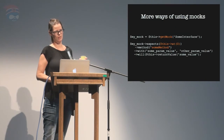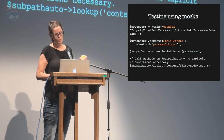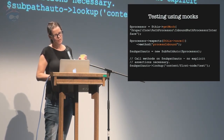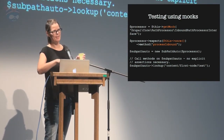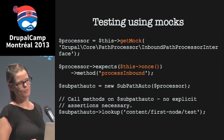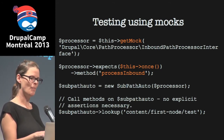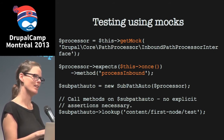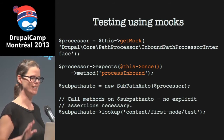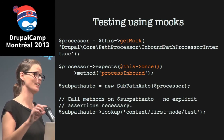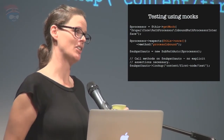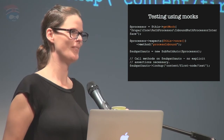A follow-up question: In the mock example for the sub-path lookup, didn't we need a return value? Yes — well spotted. In this particular implementation, the processor is going to have to return a value, otherwise the code won't work. I'd chopped that out for simplicity, but that's why you generally are going to need the will_return setup — because the chances are it's a method that's supposed to return something.